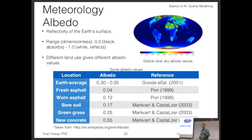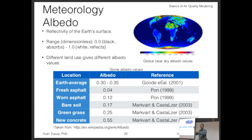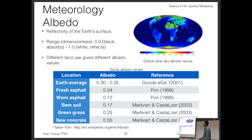Now let's look at some of the values for albedo. Can you guess what the range of albedo is? From zero to one — where zero is the most absorbing, it doesn't reflect at all, and where one is white, it reflects all the light or all radiation from the surface.